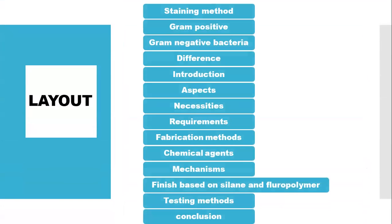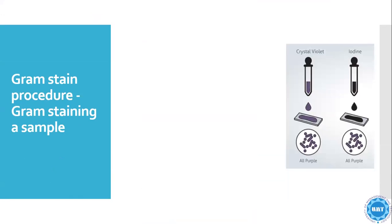I'm going to talk about the layout of this finish, in which first I'll start with the gram-positive and gram-negative bacteria understanding method — how it is identified and how it can be differentiated — then the introduction of the antibacterial, and then aspects of the antibacterial finishes. How chemicals can be used, what are the technologies, what are the nano-based antibacterial agents, what are the necessities, requirements, fabrication methods, chemical agents, mechanism, finish based on saline and fluoropolymer, and after that I'll conclude my presentation.